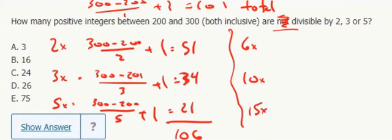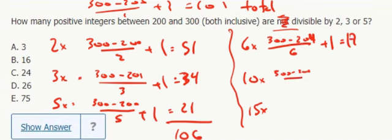So this is going to be 300 as the greatest. 201 is not a multiple of 6, but 204 is. That should give me 17. 300 minus 200 over 10 plus 1 gives me 11.